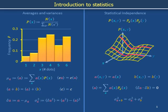This video provides a crib sheet for introductory undergraduate statistics. The materials on the left describe probability distributions, averages, and variances, and the materials on the right describe the concept of statistical independence and its consequences. It is important to understand statistical independence because this idea underlies many of the convenient formulas used in laboratory uncertainty propagation.